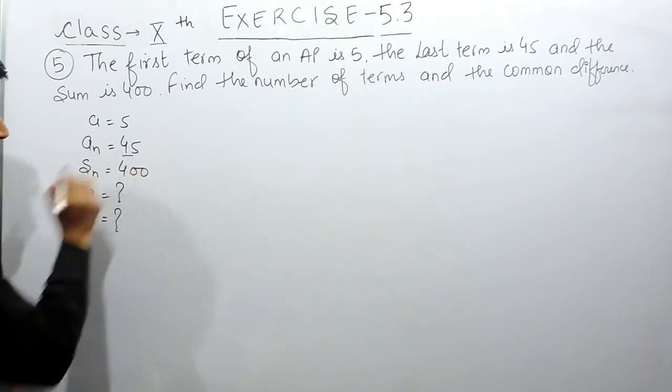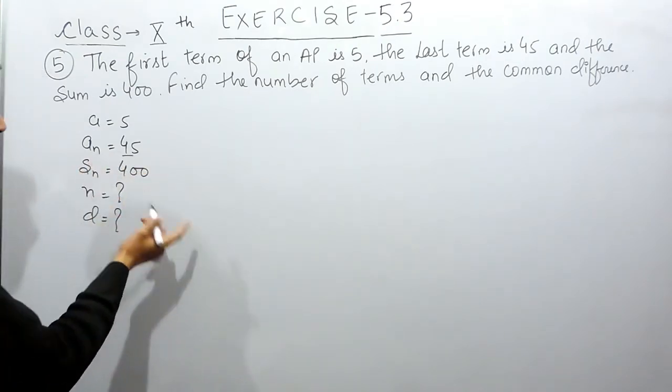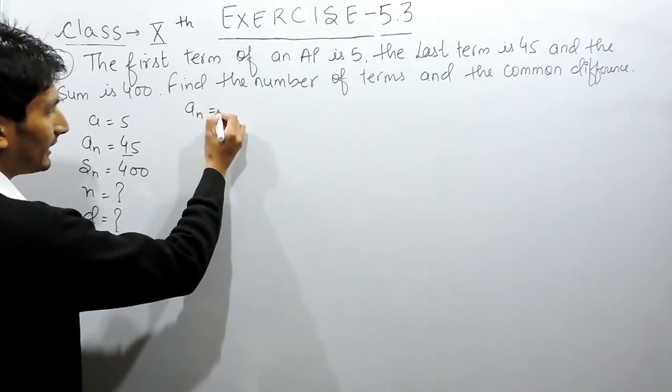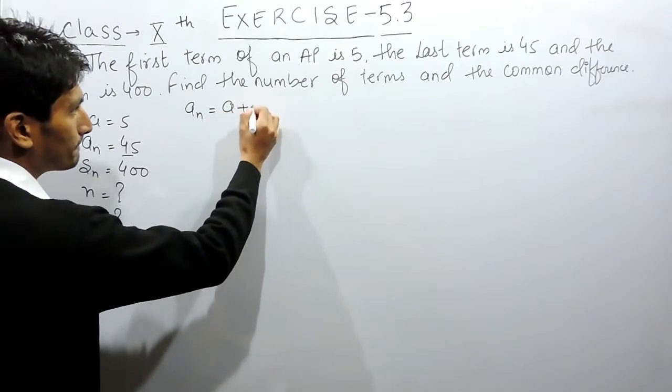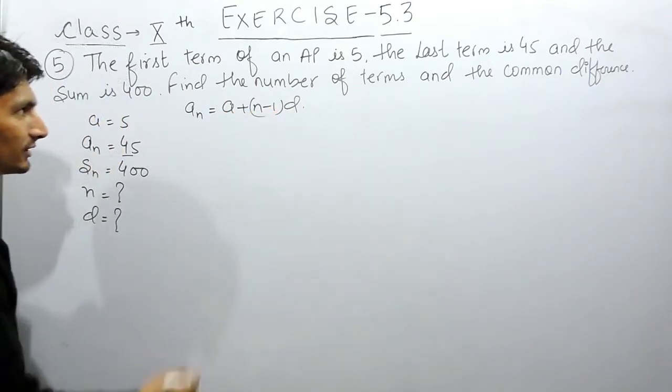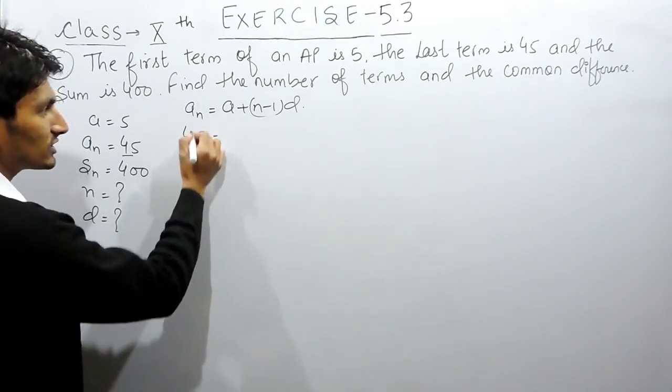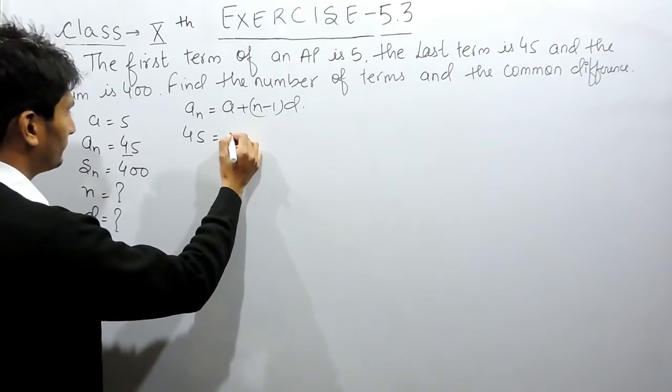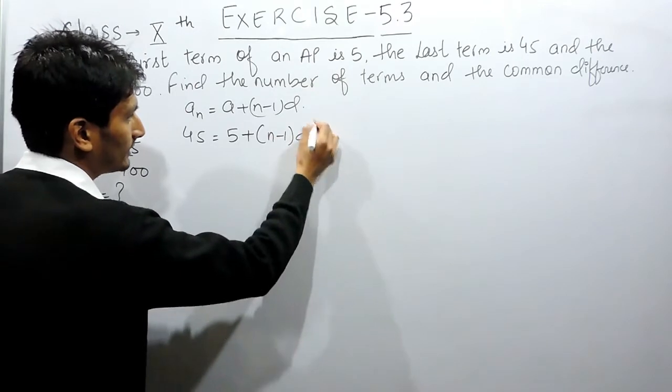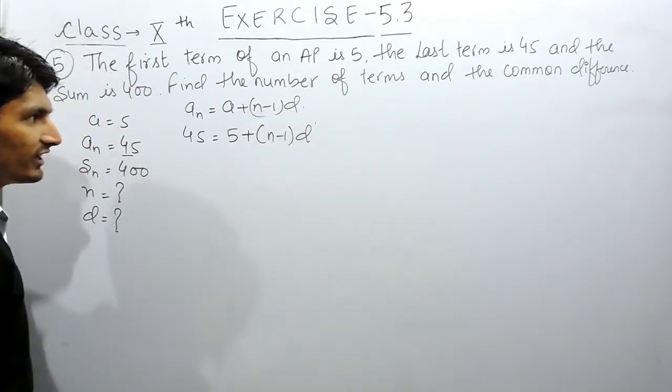First of all, the last term is given to you and this is the nth term in this AP. To find out the nth term in an AP, we have a formula. This is the formula for finding the nth term, and the nth term is given to you as 45, which is the last term here. The first term is given as 5, the number of terms you have to find out. So this is the first equation we have.